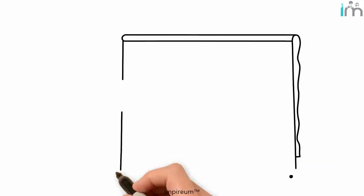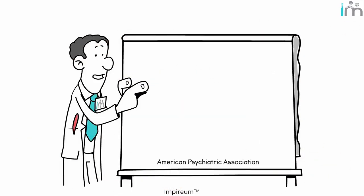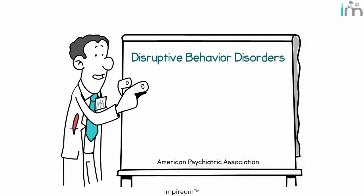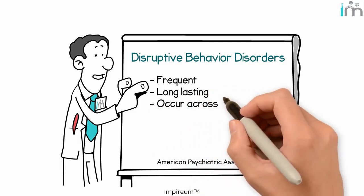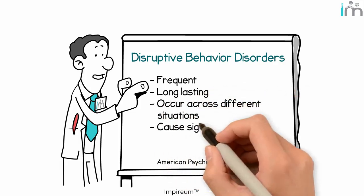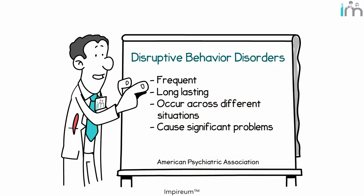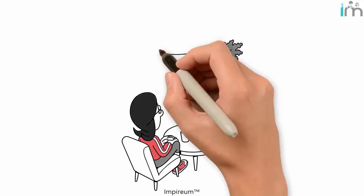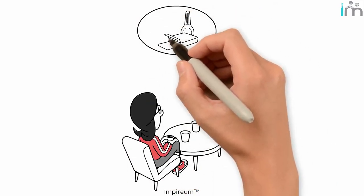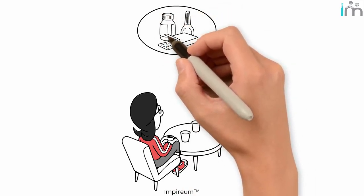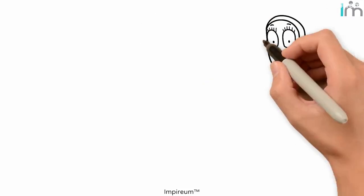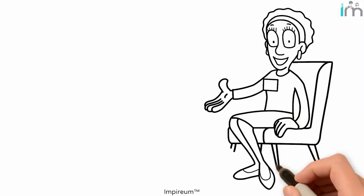Per the American Psychiatric Association, to be classified as disruptive behavior disorders, they must be frequent, long-lasting, occur across different situations, and cause significant problems. The most effective treatments involve therapy, but sometimes medication is prescribed if the sufferer is experiencing other mental health issues as well.